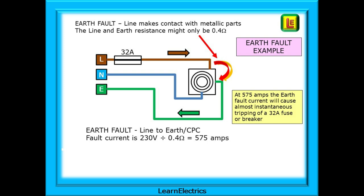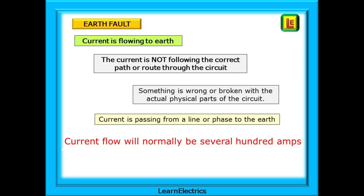The circuit breaker or fuse is going to operate in tiny fractions of a second almost instantly. During an earth fault, the current is flowing to earth. The current is not following the correct path or route through the circuit. Something is wrong or broken with the actual physical parts of the circuit and this is allowing current to pass from the line or phase wires into the earth and current flow will normally be several hundred amps.